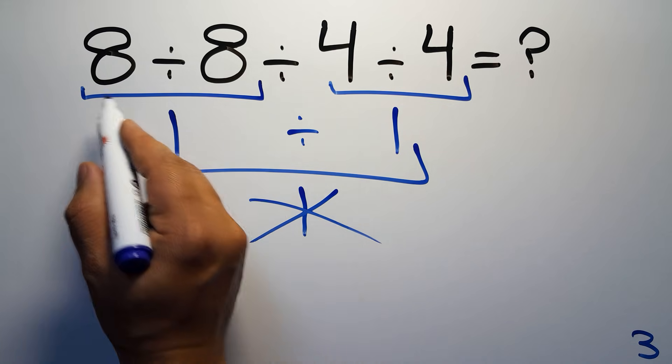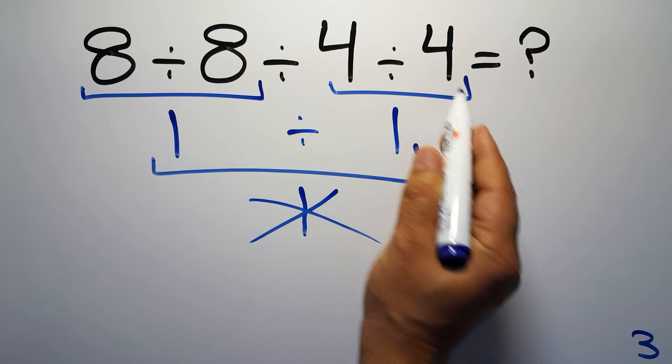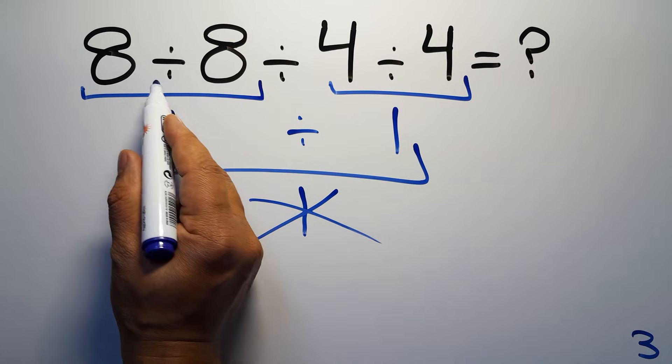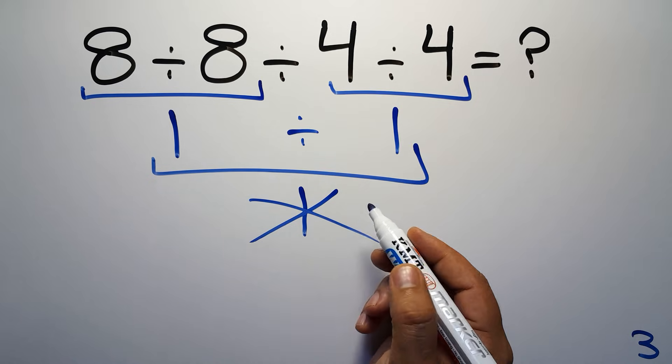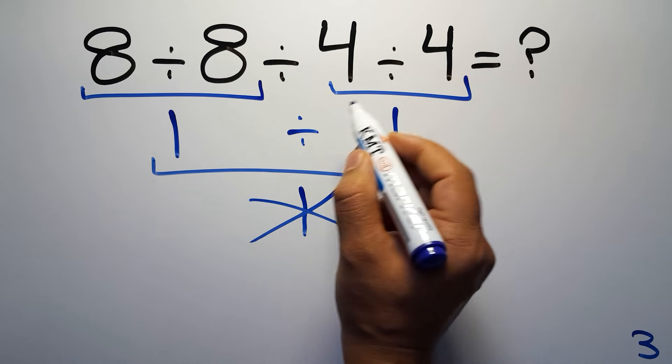So here first we have to do this division, then this division, and finally this division. If we do this division before this division, it is wrong.